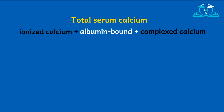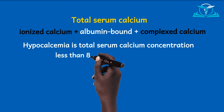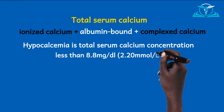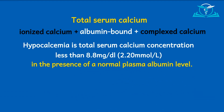Hypocalcemia, in terms of total serum calcium level, is a total serum calcium concentration less than 8.8 mg per deciliter, or less than 2.2 millimoles per liter, in the presence of a normal plasma albumin level. Meaning, for you to say that the total serum calcium concentration is below normal, you need to ensure that the patient has a normal albumin first, as a patient with low albumin may have a falsely low total serum calcium.